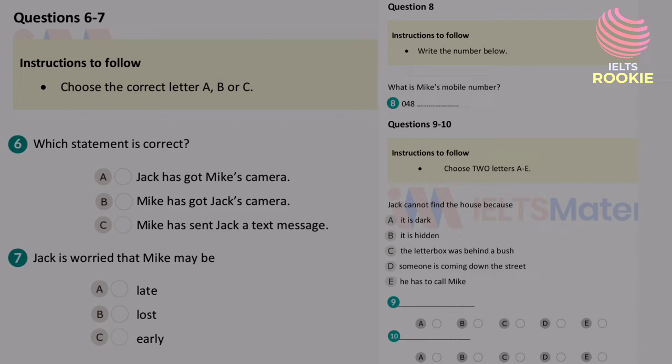Oh, okay. Wait there. I'll come outside and get you. All right, then. And don't worry about calling Mike. I'll try to call him now. Hang on. There's someone coming down the street. It looks like Mike. Oh, and I can see the letterbox now. It was hidden behind a bush. See you soon. That is the end of part one. You now have half a minute to check your answers.